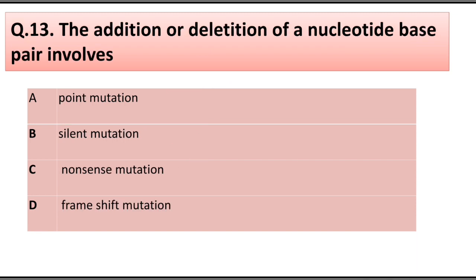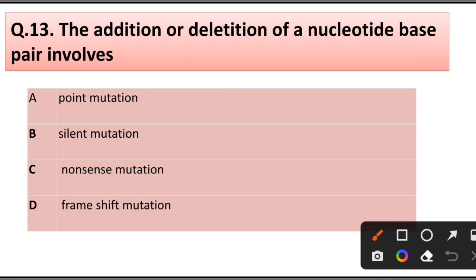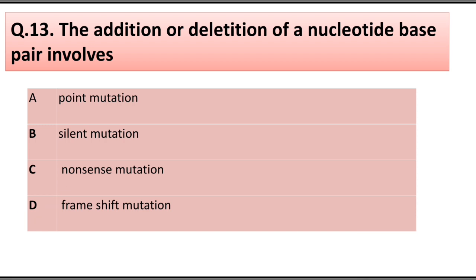Question number 13. The addition or deletion of a nucleotide base pair involves: point mutation, silent mutation, nonsense mutation, or frame shift mutation. Answer is option D: Frame shift mutation.